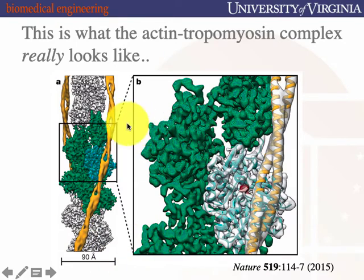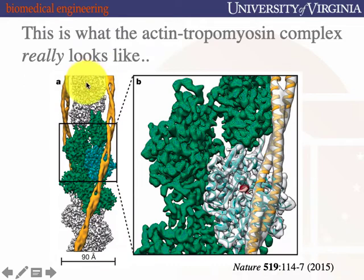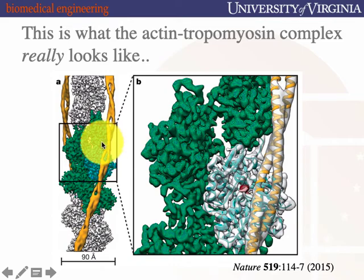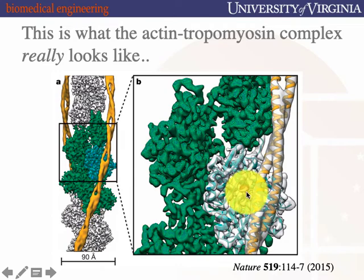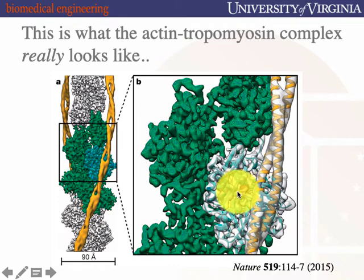In 2015, this structure was finally crystallized and pieced together from multiple crystal structures. In gray you see the actin filament, then tropomyosin, the calcium-binding domain, and troponin I and T. Troponin C contains the calcium-binding site.